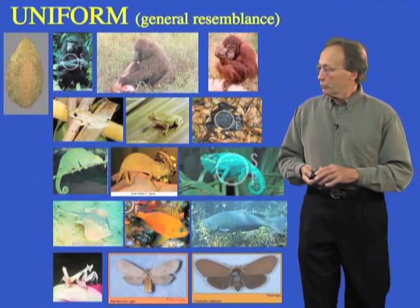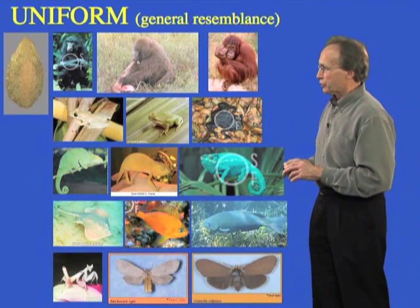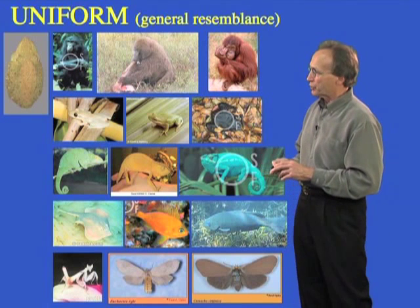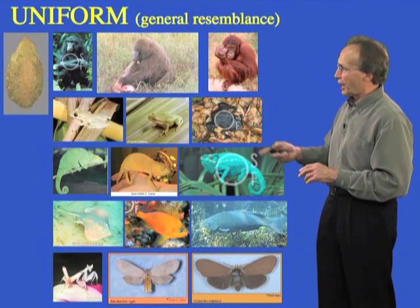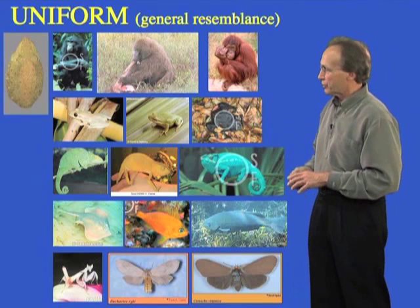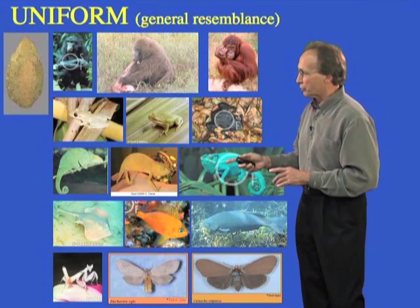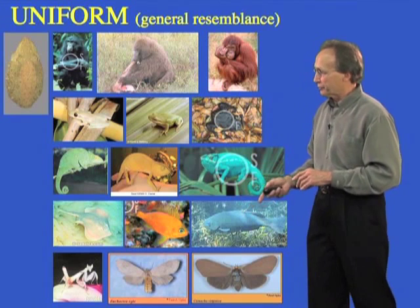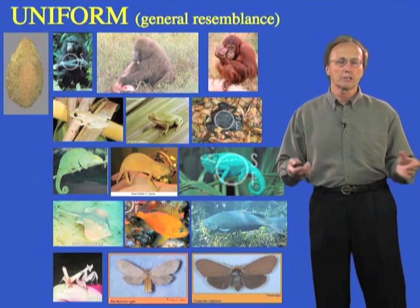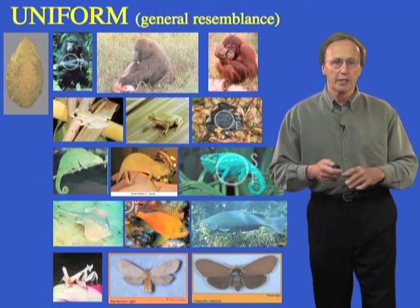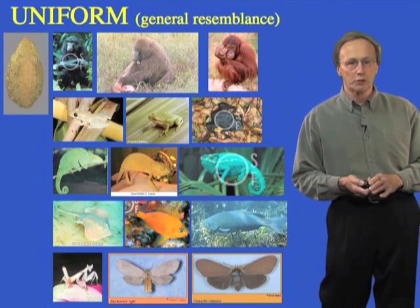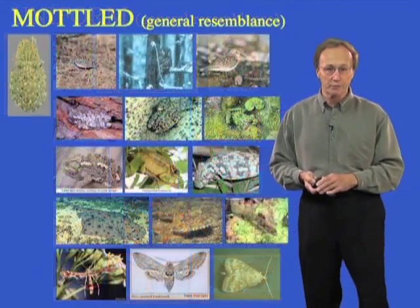With that in mind, I and many of the students in my lab have gathered examples of uniform patterning. We've gone all the way from primates, to amphibians, to reptiles, to fishes, to insects — and there's a lot of uniform coloration out in the world, we all know that. On a uniform background, some degree of camouflage will be achieved.